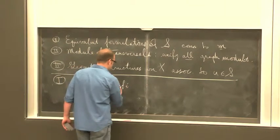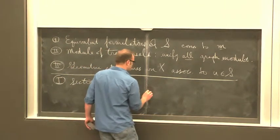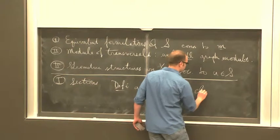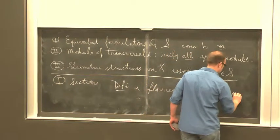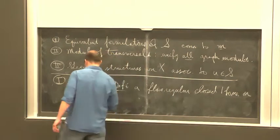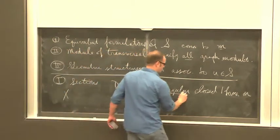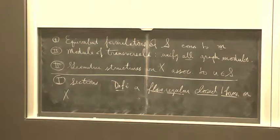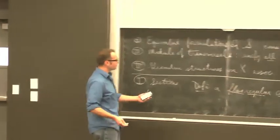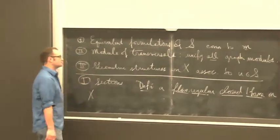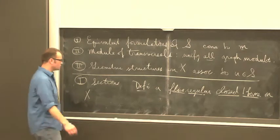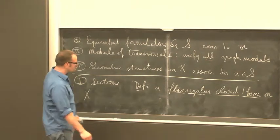Even though we don't have a smooth manifold, you can still define something like a closed one-form. A closed one-form on X is a collection of functions defined on the two-cells, such that whenever two two-cells overlap, the difference of the functions is locally constant on the intersection. So that's what it means to be a closed one-form. Now we want a property analogous to evaluating positively on the vector field generating the flow.